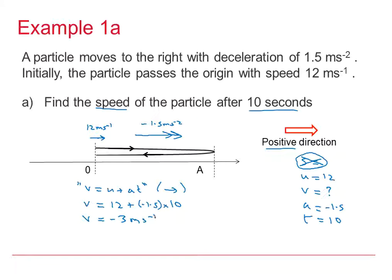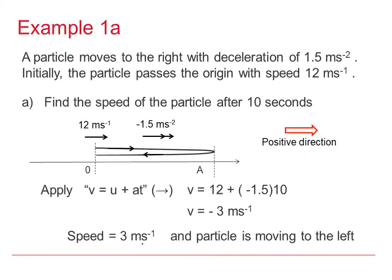That negative velocity tells me the particle is going backwards. The question asks for the speed, so the speed of the particle after 10 seconds is 3 metres per second — travelling backwards. The velocity is minus 3; the speed is 3 metres per second.